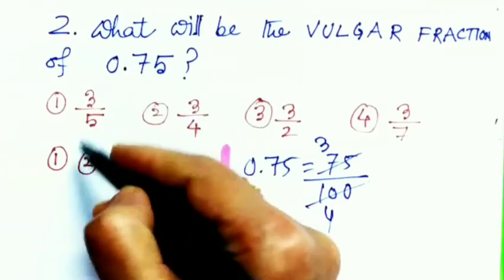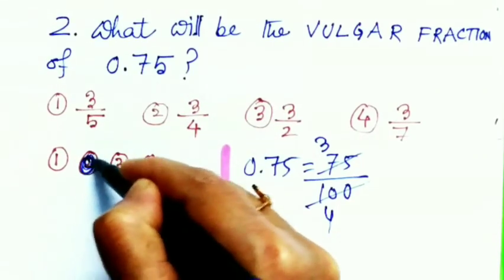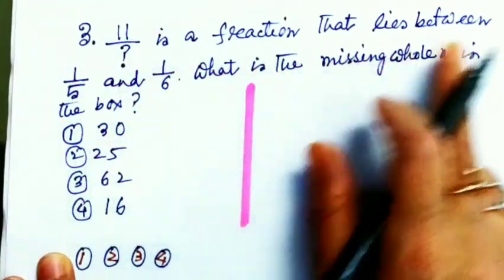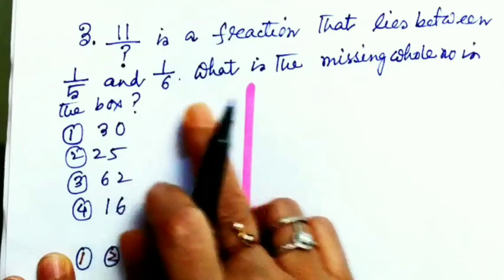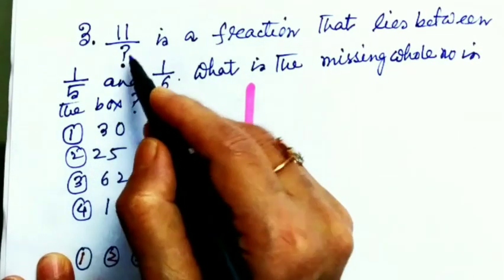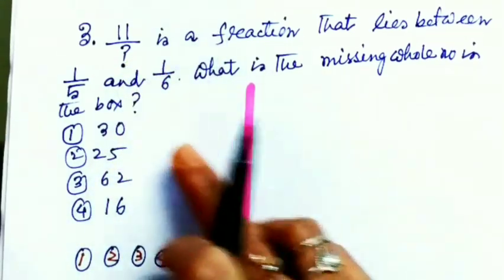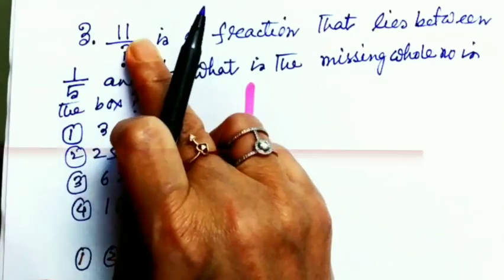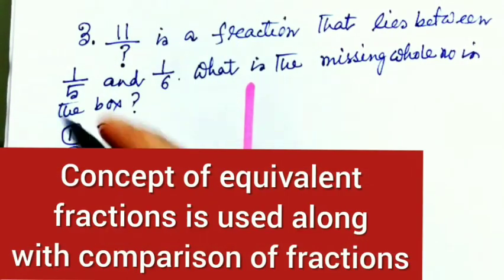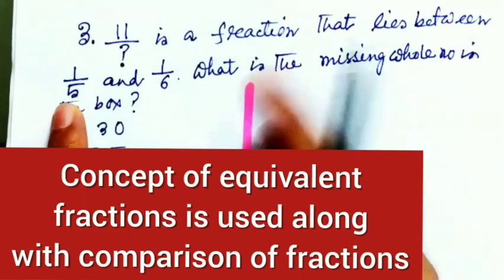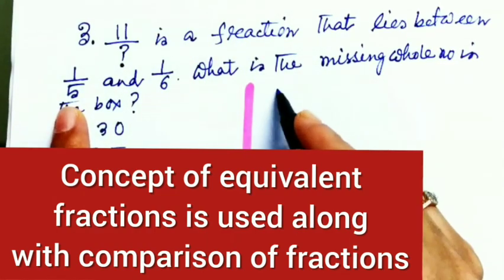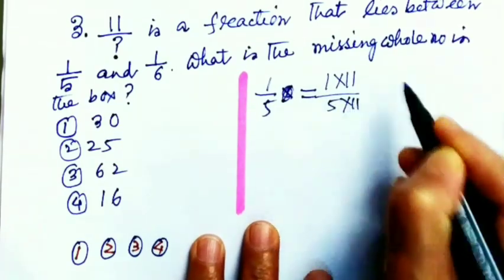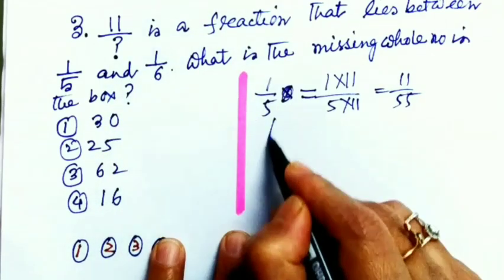Number three: 11 divided by dash is a fraction that lies between 1/5 and 1/6. What is the missing whole number in the box? We'll have to find out this one which lies between these two fractions. As the numerator is 11, I'm making these two equivalent fractions with 11 as numerator. 1/5 equals 1 times 11 divided by 5, equals 11/55. Again, 1/6 equals 1 times 11 divided by 6 times 11, equals 11/66.